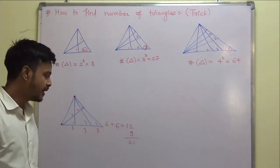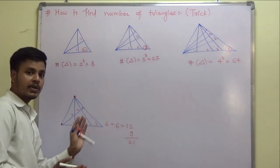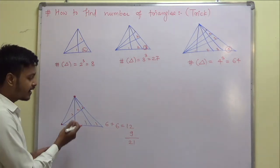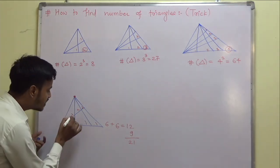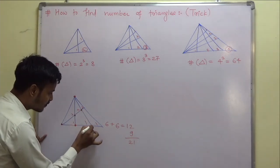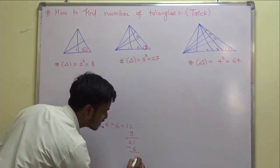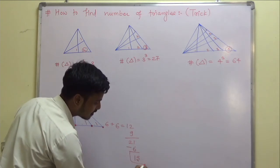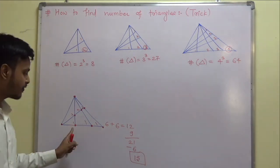That is not the correct answer because when we are considering both reference points and taking a base first from one and then the other, some triangles have been counted twice. To avoid this double counting, you need to count the number of interior points — 1, 2, 3, 4, 5, 6 — and subtract 6. When you subtract 6 the repeated triangles are removed, and we come back to the correct answer of 50 triangles.